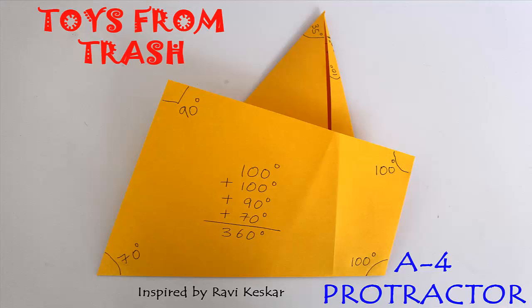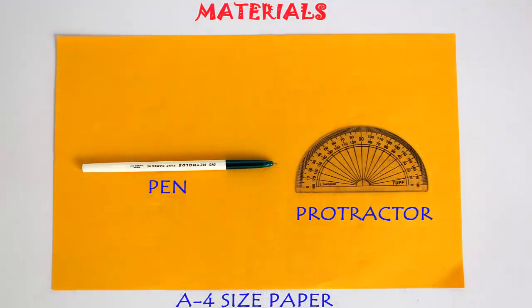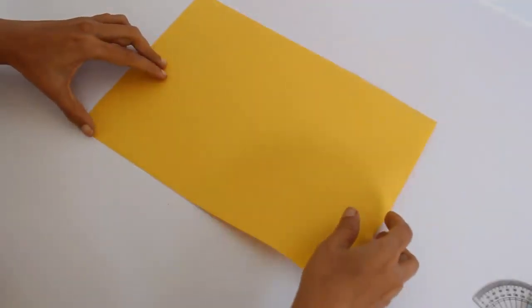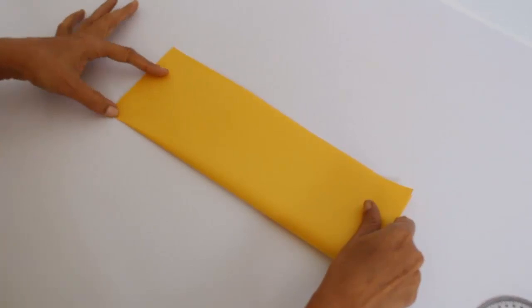This is the second part of our series of folding various angles with a rectangular paper. Here we will use an A4 size paper. Now A4 size paper is 30 centimeter by 21 centimeter.